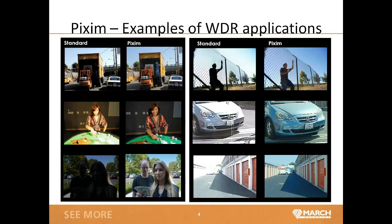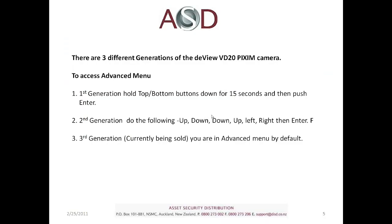Here are some rough examples of how the PIXM WDR chip works and how it can improve the image in certain lighting conditions. By no means do we guarantee these results, but it's a good example of what the chip can provide. Currently in the field there are three different generations of the Vue VD20 WDR PIXM camera, and accessing the advanced menu for each requires a different setup. Unfortunately there's currently no way to tell which generation a camera is — we are working on a better way to distinguish them, but for now just try one of these three settings and one should work.